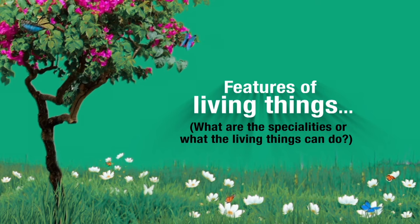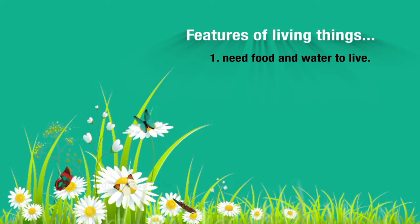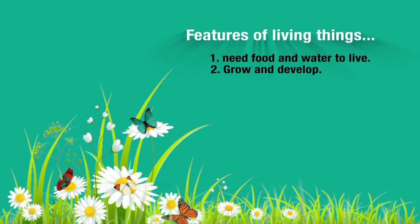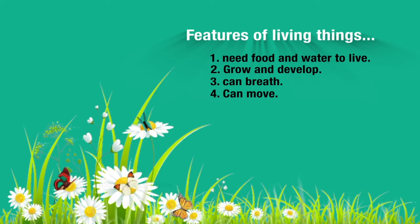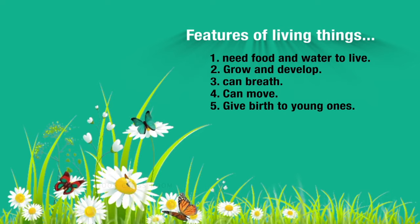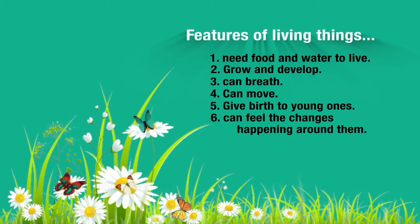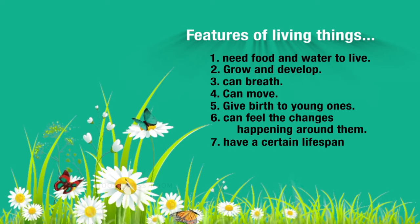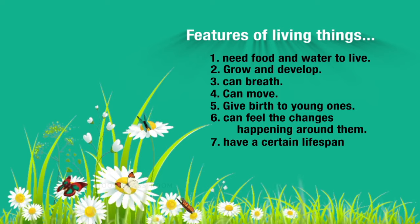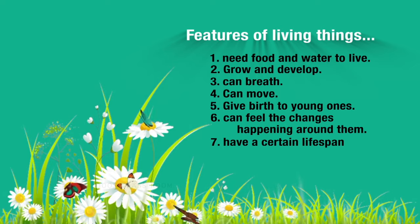What are the things living things can do? Living things need food and water to live. Living things grow. Living things breathe. Living things can move. Living things give birth to young ones. Living things can feel. And living things have a certain age up to which they live, and that is known as the life span.